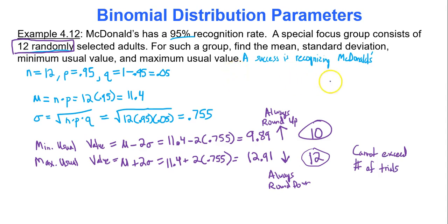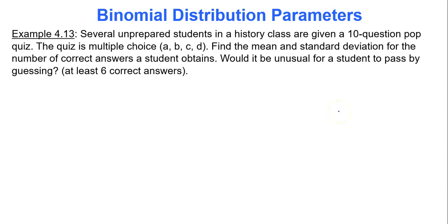The minimum and maximum usual value — sometimes you'll put it in interval notation with brackets and a comma separating the numbers: [10, 12]. That may be how they ask you to respond, or they may just ask you to type in 10 and 12 separately. Now let's practice a little bit more. Unprepared students are given a 10-question multiple choice pop quiz. Find the mean and standard deviation for the number of correct answers. Would it be unusual for a student to pass by guessing? Passing means getting at least 6 of the 10 questions correct.